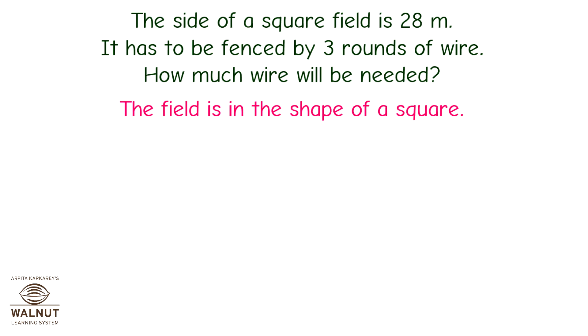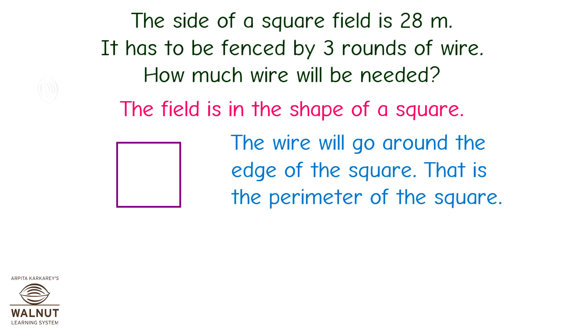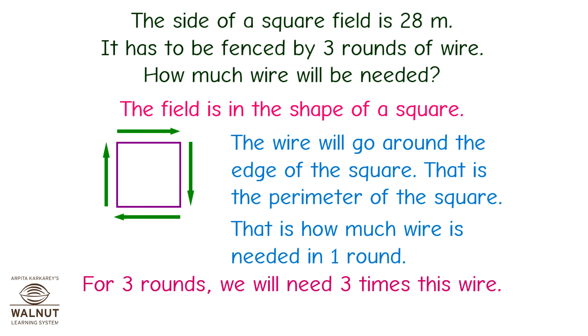The field is in the shape of a square. The wire will go around the edge of the square. That is how much wire is needed in one round. For three rounds, we will need three times this wire. So, we multiply the perimeter by 3.